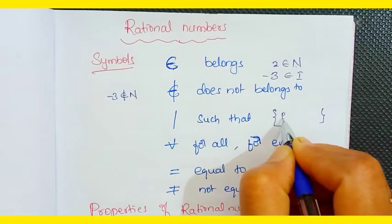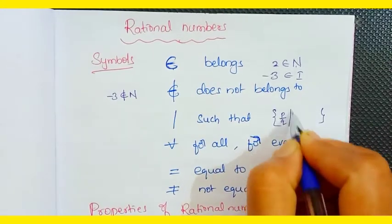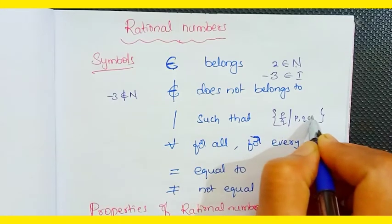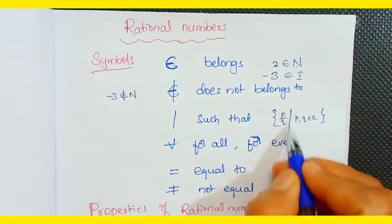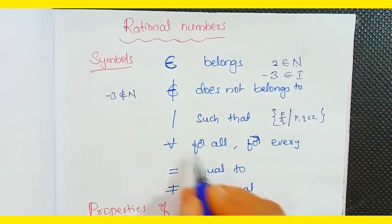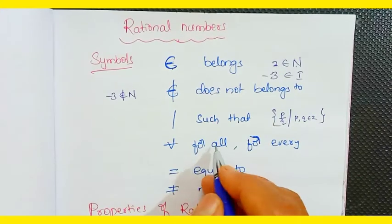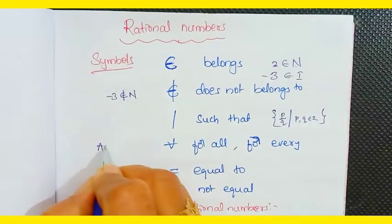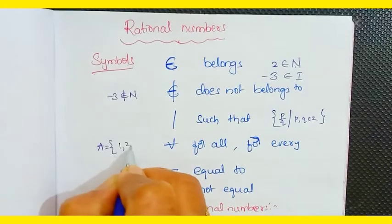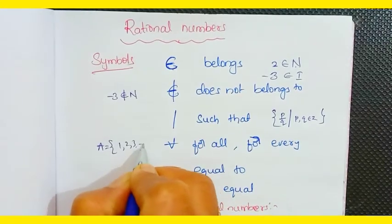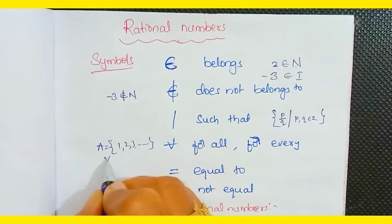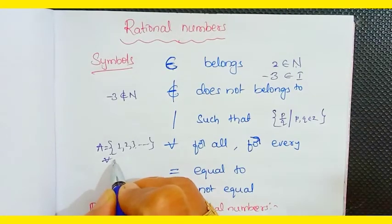For example, p by q such that p and q belong to Z — this notation is used in set builder form. The symbol 'for all' or 'for every' — suppose A equals 1, 2, 3 and so on — we say 'for all natural numbers'.